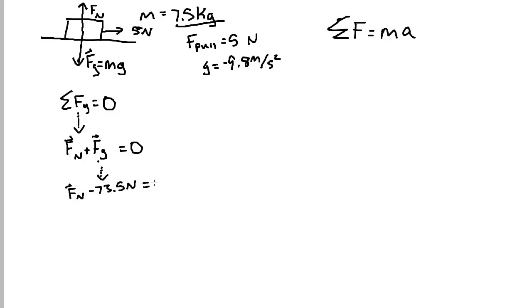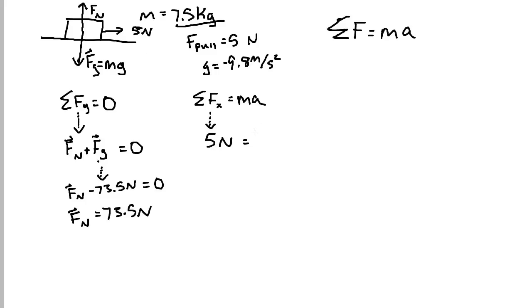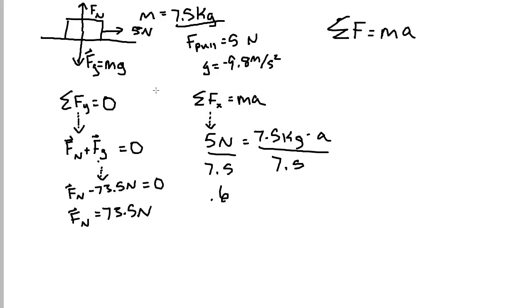Since those equal 0, my normal force equals my weight. In this first example we're neglecting friction, so let's look at the sum of our forces in the x direction — that equals mass times acceleration. The only force in the x direction is 5 Newtons, and the object's mass is 7.5 kilos. Dividing both sides by 7.5, the object's acceleration is 0.67 meters per second squared.